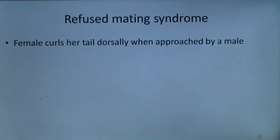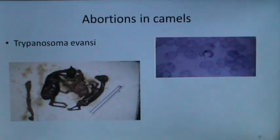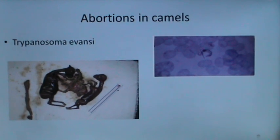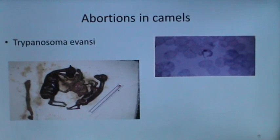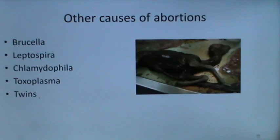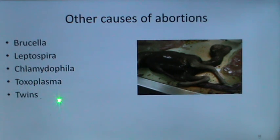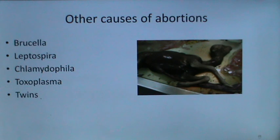In the refuse mating syndrome, the female curls her tail dorsally when approached by a male, which is a problematic condition. Abortions in camels can occur due to Trypanosoma evansi, which causes high temperatures and poor body condition. Other causes of abortions include Brucella, Leptospira, Chlamydophila, Toxoplasma, and twins. There is strict vigilance on monitoring for Brucellosis in the Arab world, and camels found positive are sent to the slaughterhouse.